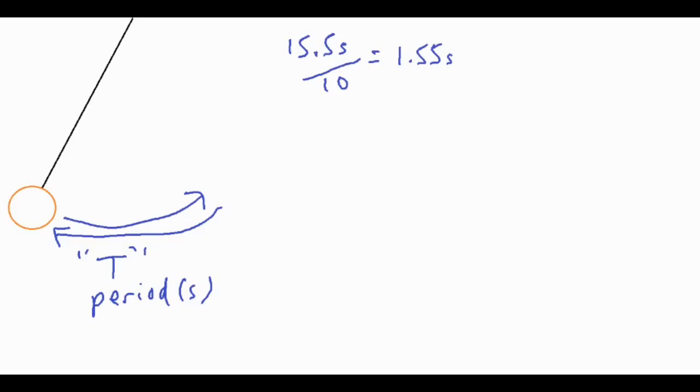If you want to run an experiment to find the relationship between period and mass, angle of release, and length, you would go ahead and take a look at all three of those: angle of release, mass, and length of the string.